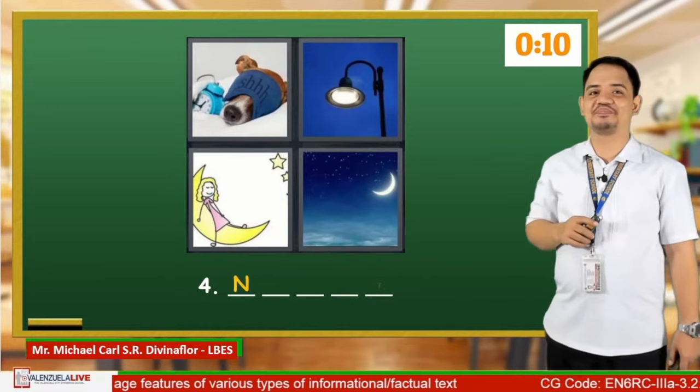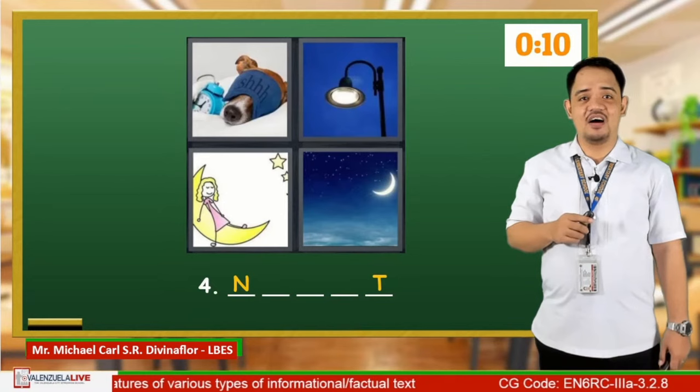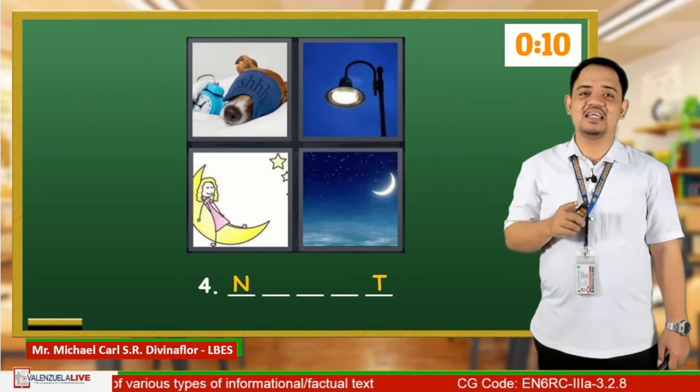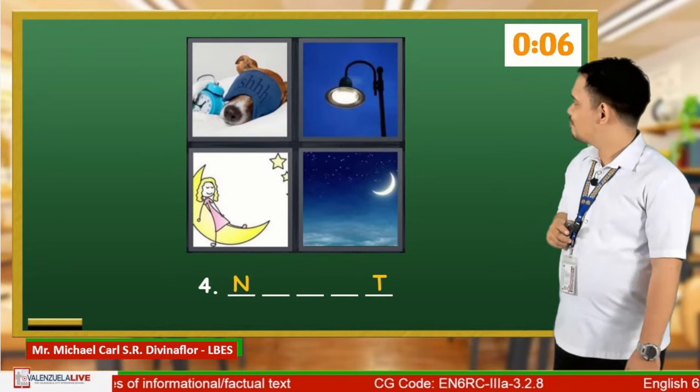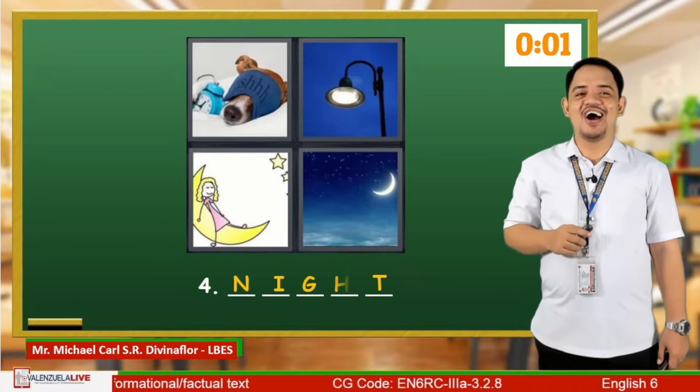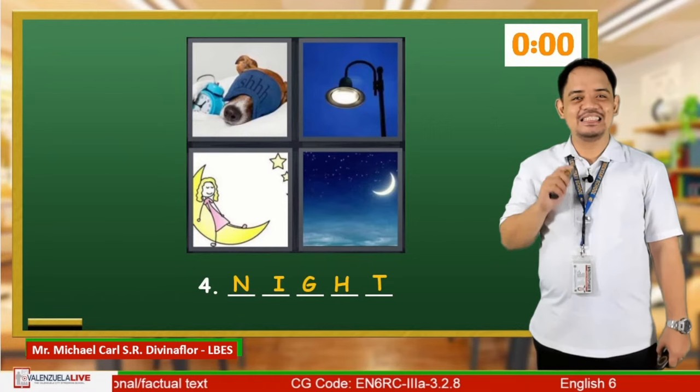The fourth group of pictures is here. We have a dog sleeping, a streetlight on, and a girl sleeping on the moon. And lastly, the moon is high in the sky. What do you think is the word that we are looking for? And the answer is Night! Awesome! You are all getting great with this game.